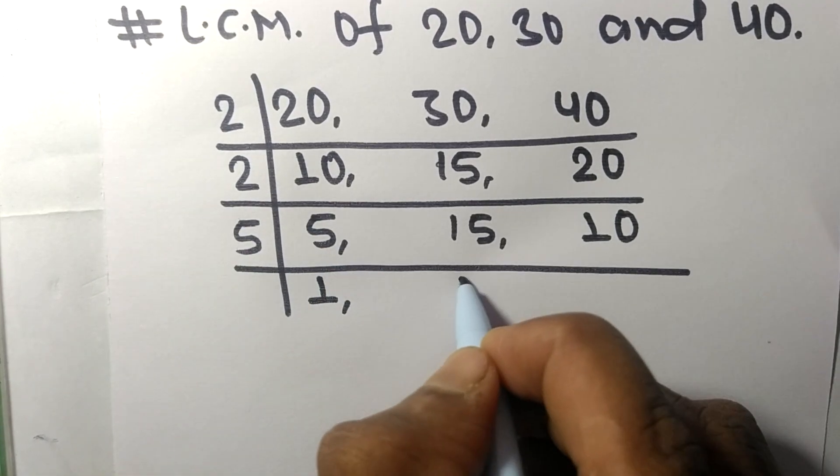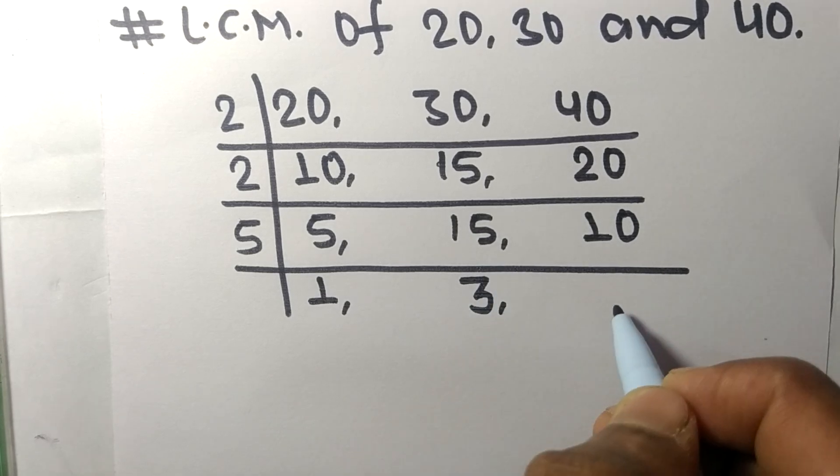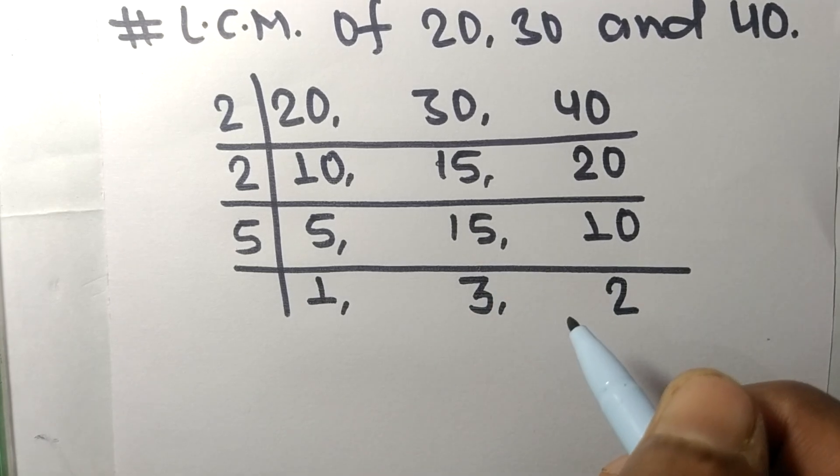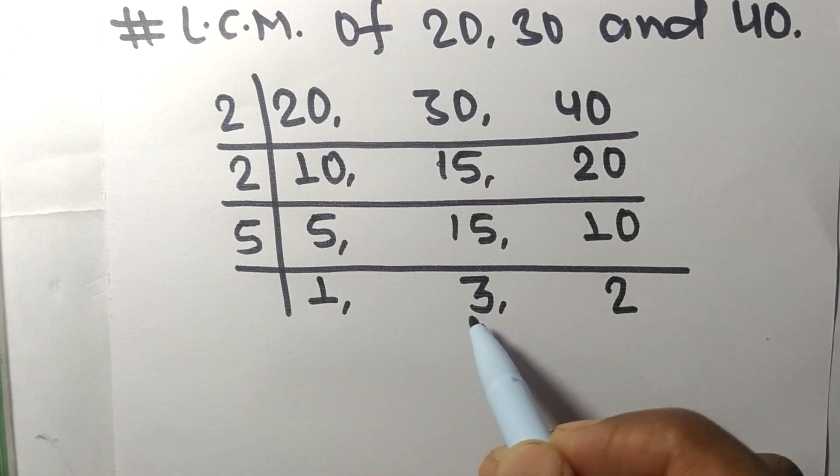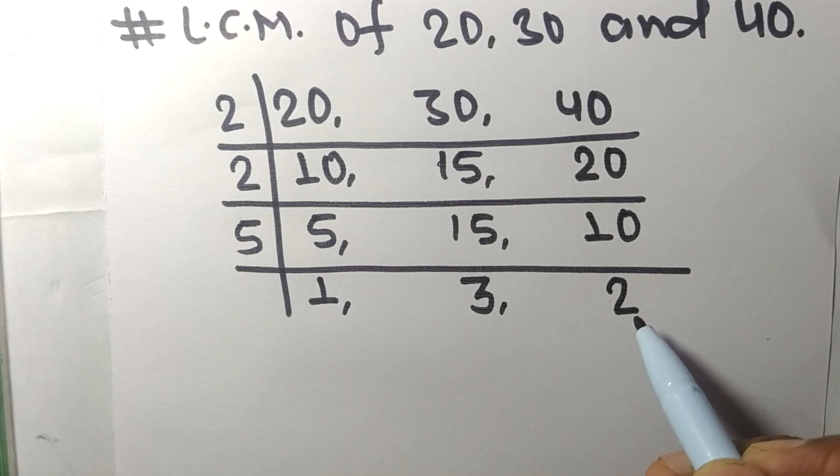Now the numbers 1, 3, and 2 are not divisible by the same number. Therefore, the LCM is equal to, from this side, 2 times 2 times 5.